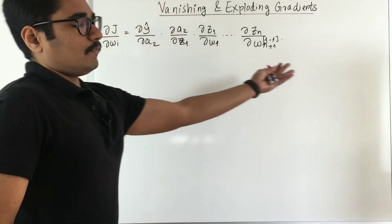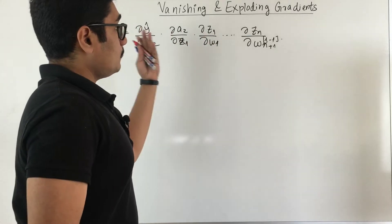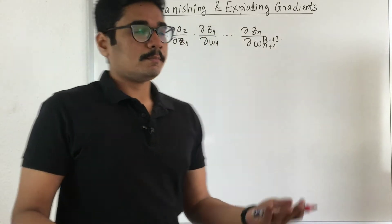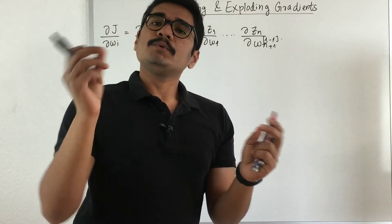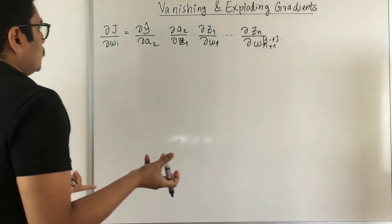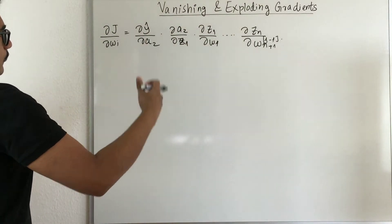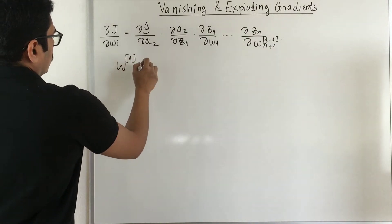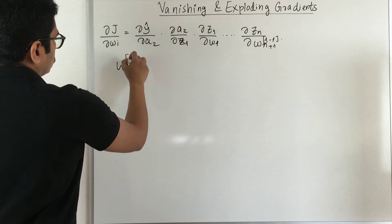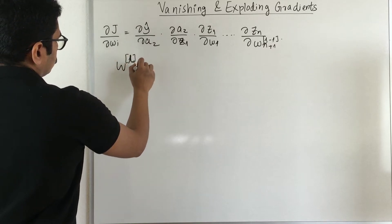So essentially for going back we mainly deploy the back propagation algorithm, and for updation of the weights at each point we mainly use gradient descent. In this process we can have a generalized representation of weight at each individual layer, say this is L for layer.